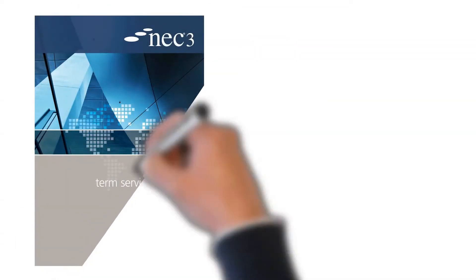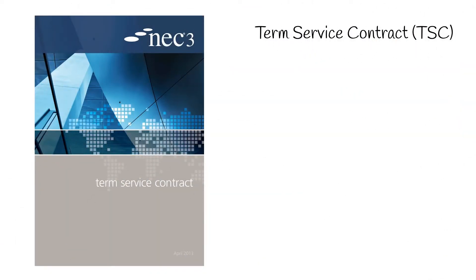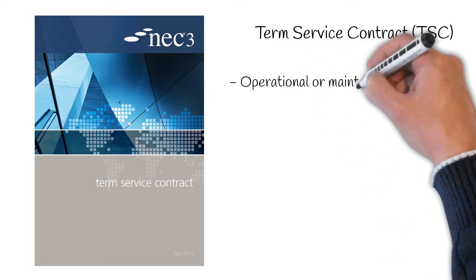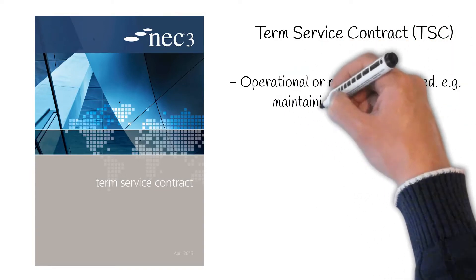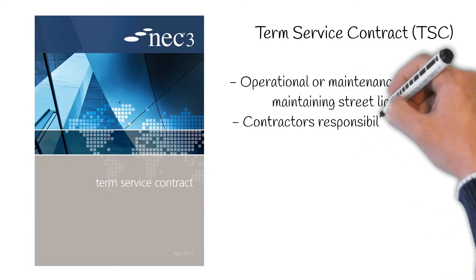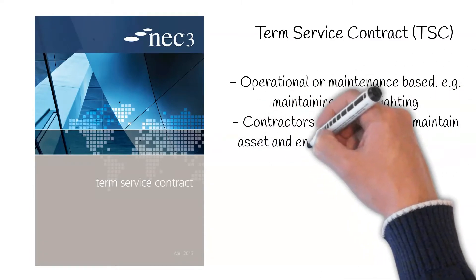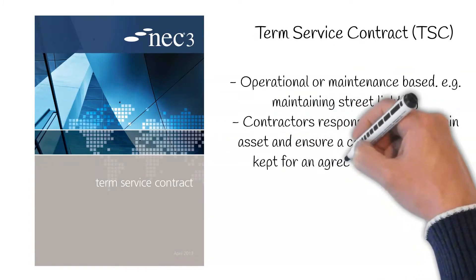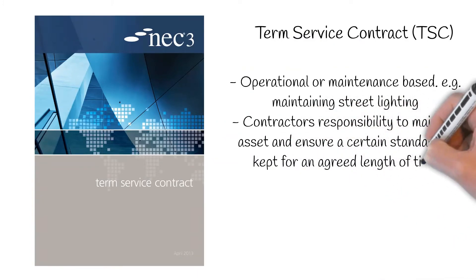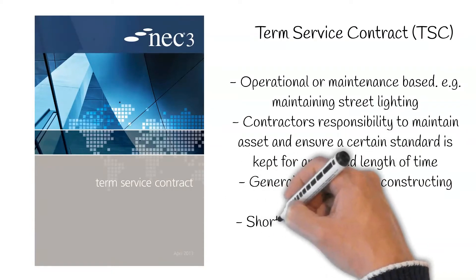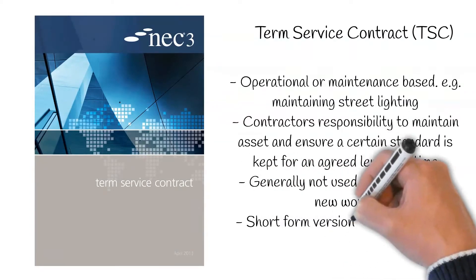Term Service Contract, or TSC for short. This is for a project which is operational or maintenance-based, for example maintaining a highway asset like street lighting. It will be the contractor's responsibility to maintain the asset and ensure a certain standard is kept for an agreed length of time. This contract isn't generally used for constructing new works. There is also a short-form version of this contract for low-risk work.